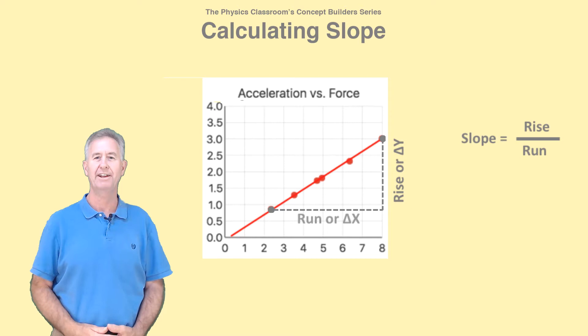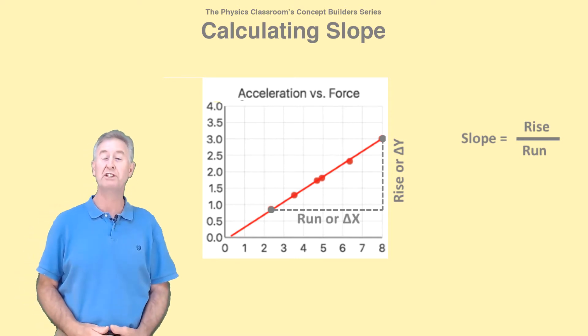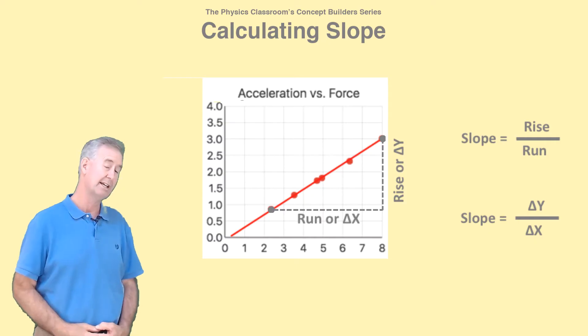This is delta y. The run is the change in the x-coordinate value between those same two points. This is delta x. Slope is calculated as delta y divided by delta x.